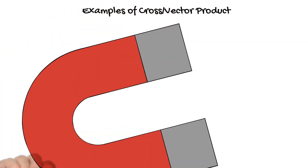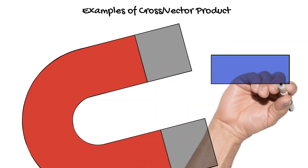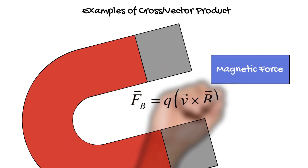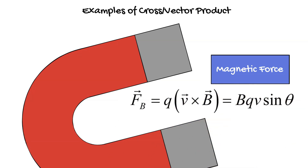The last example for cross product is the magnetic force. The formula is F_B equal to q v cross B equal to qvB sin theta. Magnetic force is another vector quantity, that's why cross product is called the vector product.